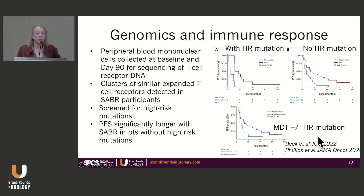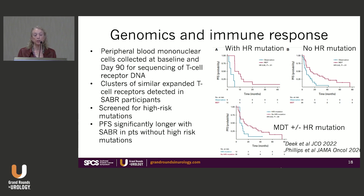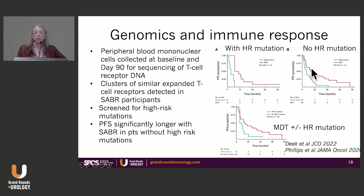In terms of genomics and immune response in ORIOLE, peripheral blood mononuclear cells were collected at baseline and day 90 for T-cell receptor DNA sequencing. Clusters of expanded T-cell receptors were detected in SABR participants, suggesting an immunologic response. Progression-free survival was significantly longer with SABR in patients without high-risk mutations. Those with a high-risk mutation still showed improvement from treating metastatic sites, but those without a high-risk mutation had a more substantial improvement in progression-free survival.